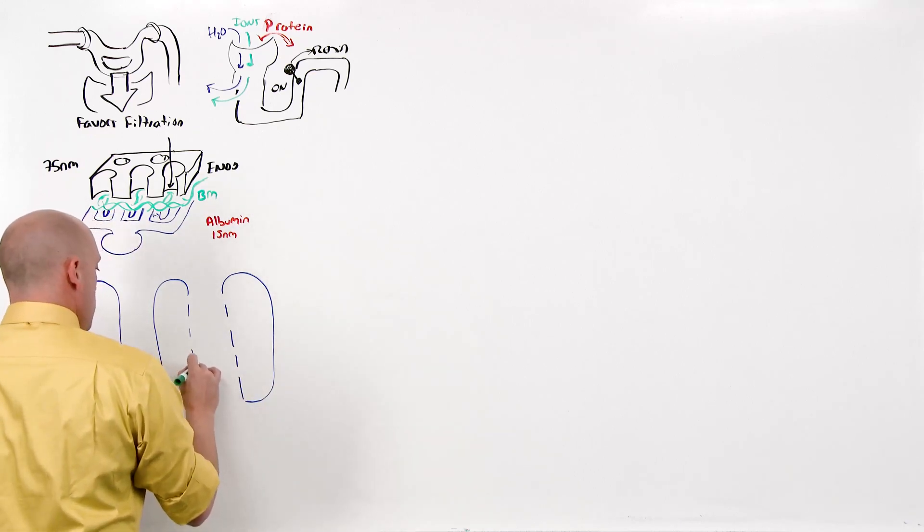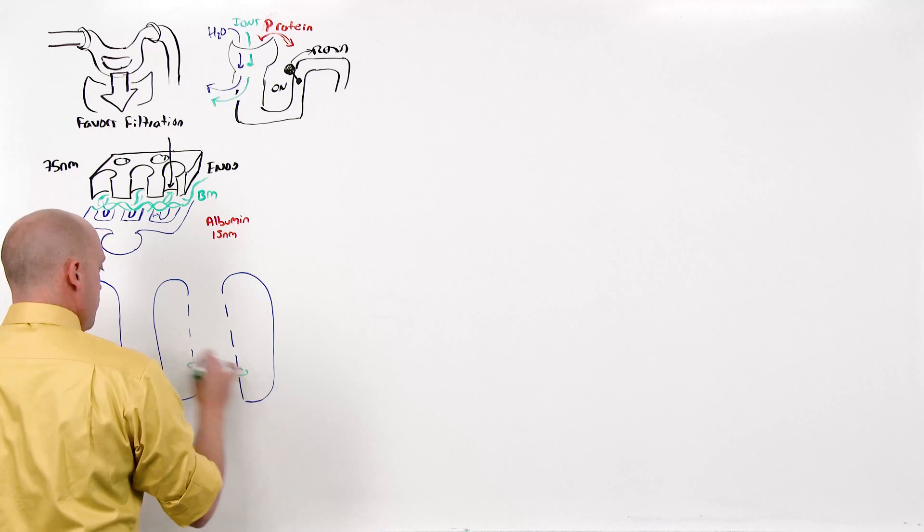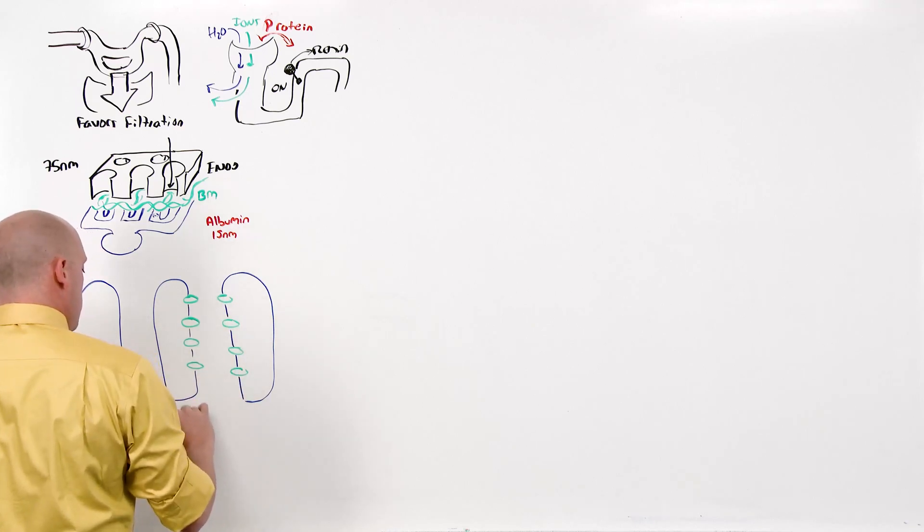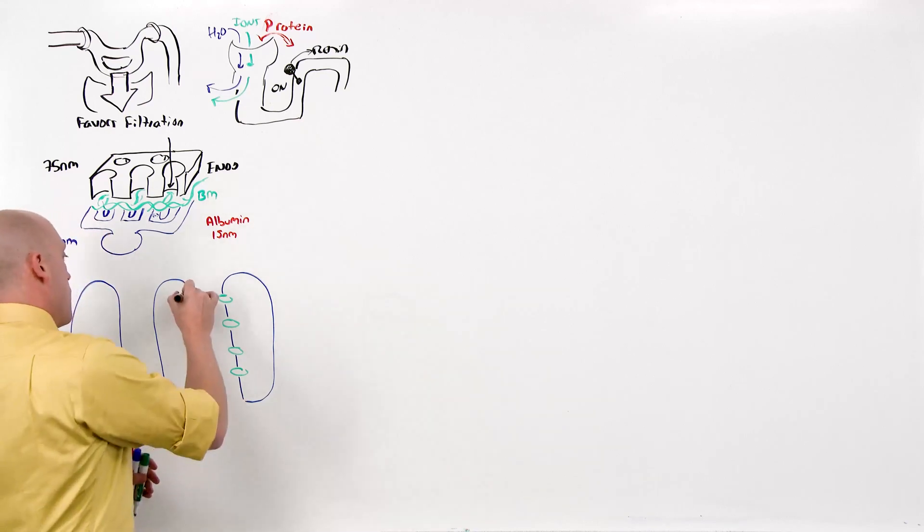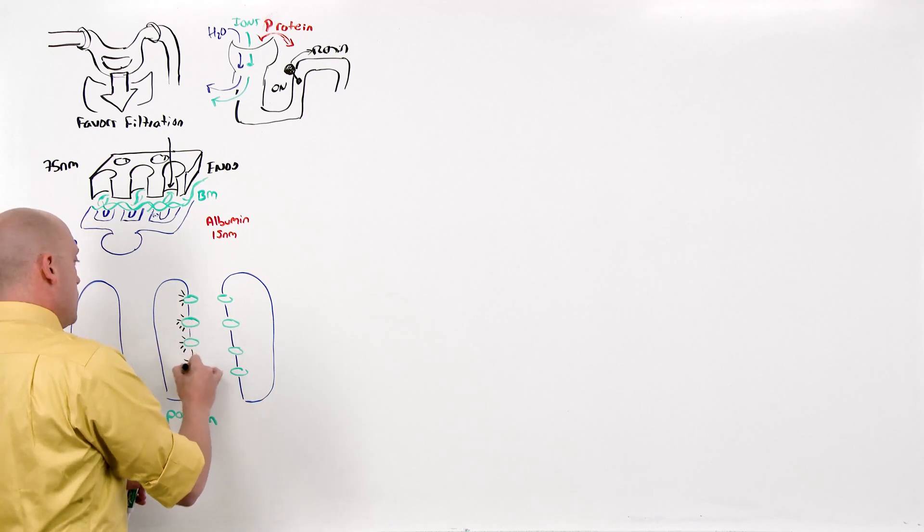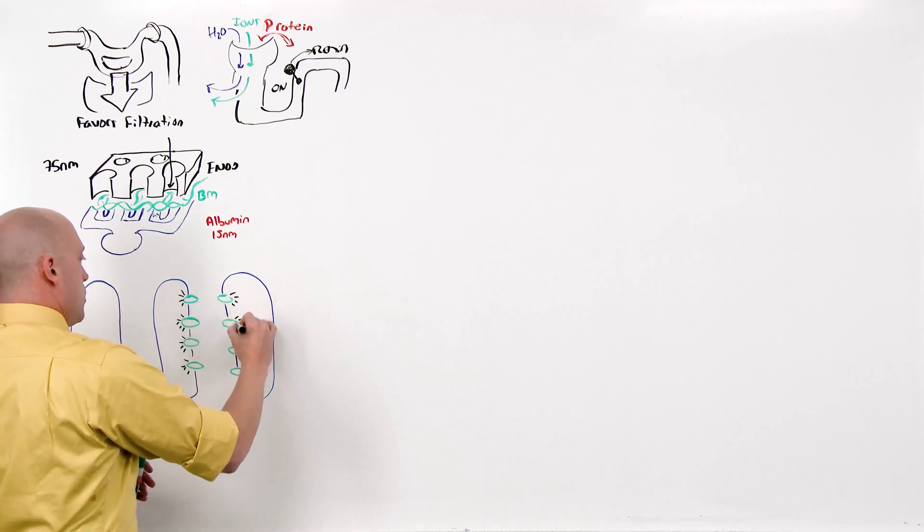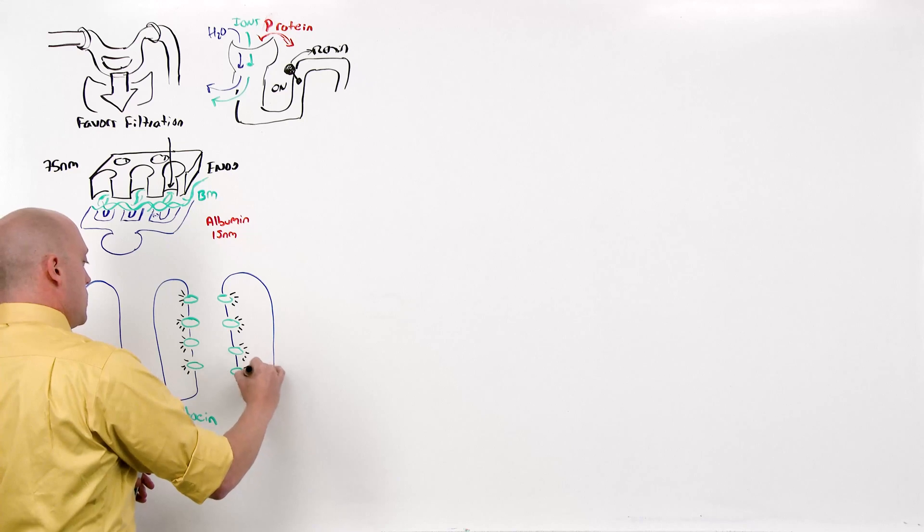On the plasma membrane is a molecule called podocin. Podocin anchors this thing I'm about to describe intercellularly to actin filaments. This is obviously more complicated than this but the only two molecules I want you to learn are podocin and nephrin.